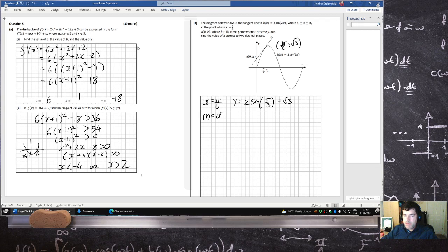The slope is the derivative, which will be 4 cos(2x) at the point pi over 6. That's 4 cos(pi over 3), which is 2.